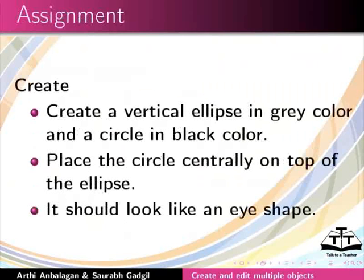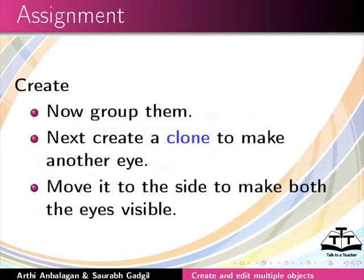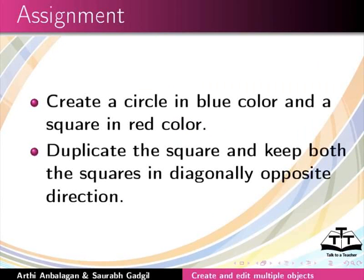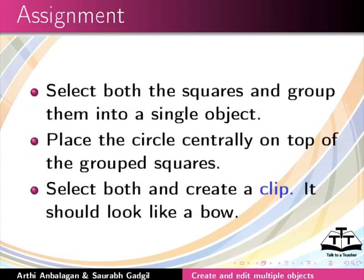Here are two assignments for you. First, create a vertical ellipse in gray color and a circle in black color. Place the circle centrally on the top of the ellipse so it looks like an eye shape. Group them, then create a clone to make another eye and move it to the side. Second, create a circle in blue color and a square in red color. Duplicate the square and keep both squares in diagonally opposite directions. Select both squares and group them, then place the circle centrally on top of the grouped squares. Select both and create a clip — it should look like a bow.